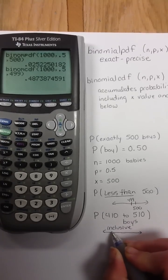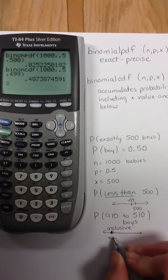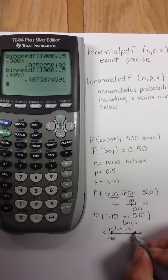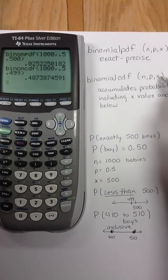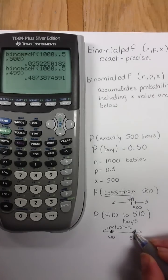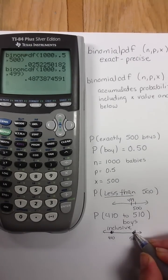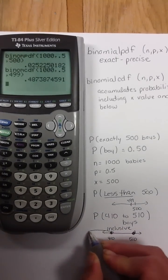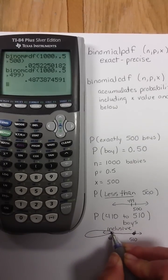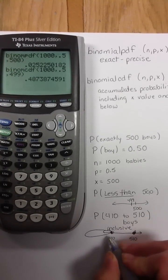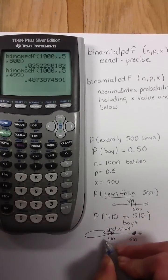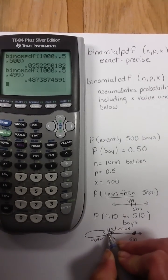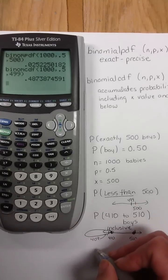If you're going 410 and you're including it to 510 and you're including it, our cumulative function will accumulate from this number on down. So, I'm going to accumulate 510 on down, but notice that'll be too much. So, I need to get rid of anything below 410. So, since I want to get rid of anything below 410, that means I'm going to subtract off 409 and below.